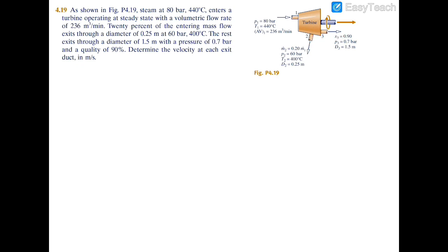Looking at this, you can tell we're going to use the one-dimensional mass rate balance. We have the volumetric flow rate coming in at inlet one, a mass flow rate relation at exit two, and we're given the diameters of exits two and three. We want to find velocity two and velocity three, both in meters per second. The main expression we'll use is: mass flow rate m-dot equals area times velocity, or the volumetric flow rate divided by specific volume.